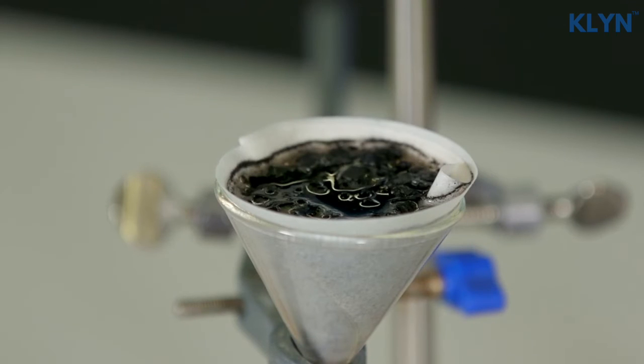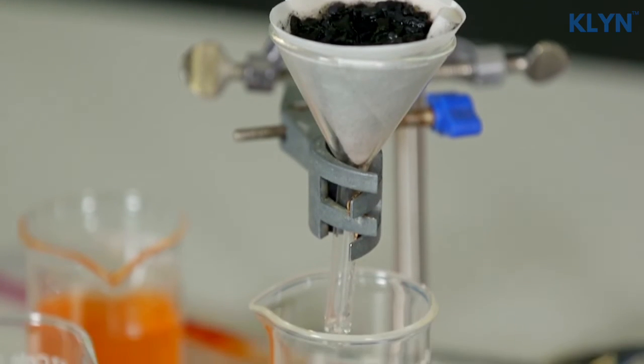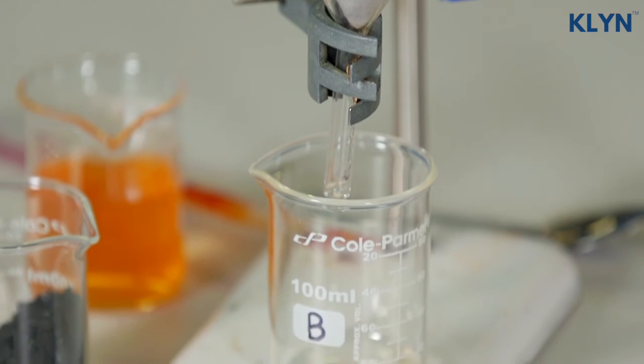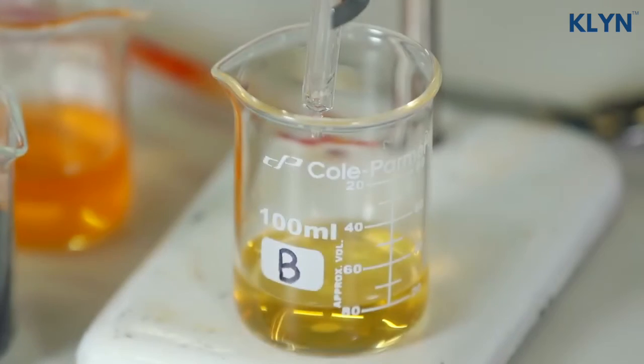As the colored water flows through the activated carbon, the microscopic pores absorb the food coloring particles, removing them from the water, making the water clearer.